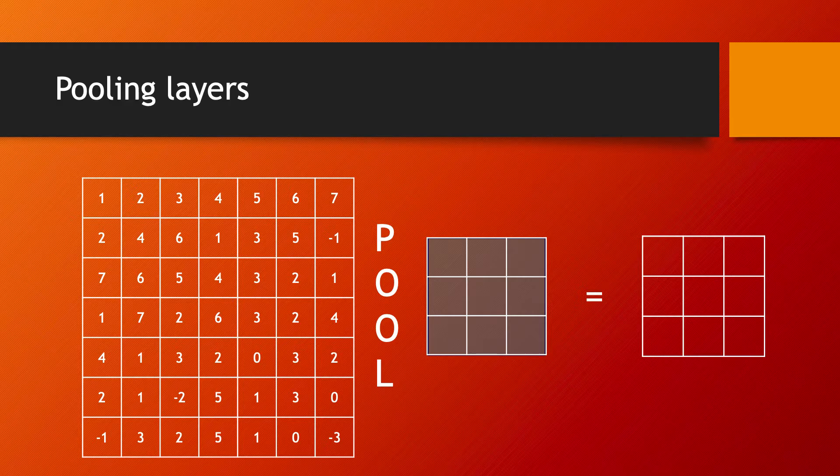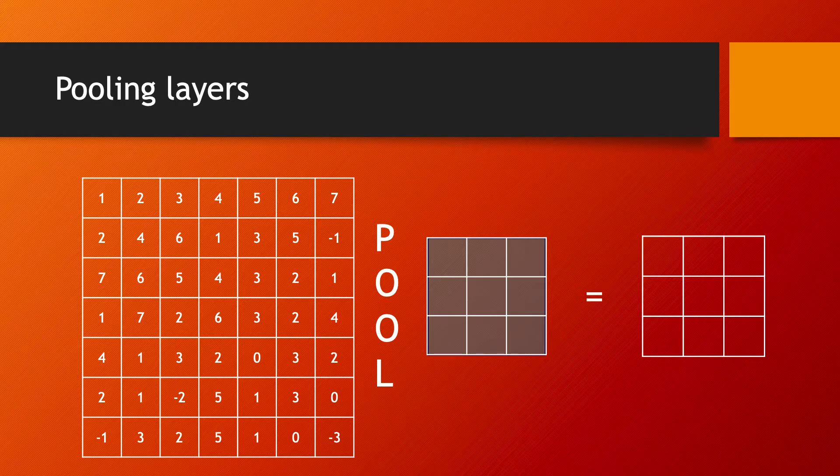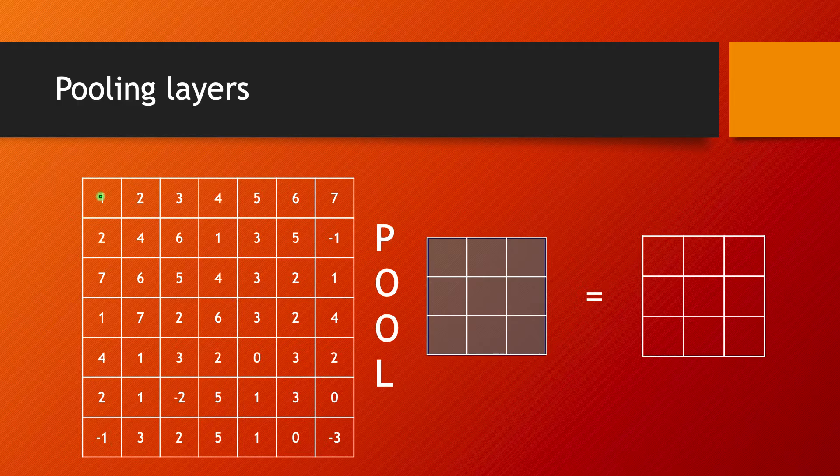The setup of the computation done in a pooling layer is, conceptually speaking, similar to that done in a convolutional layer, with some simplified aspects to it. In principle, as I have on this slide, you have an input presented to you as a matrix.